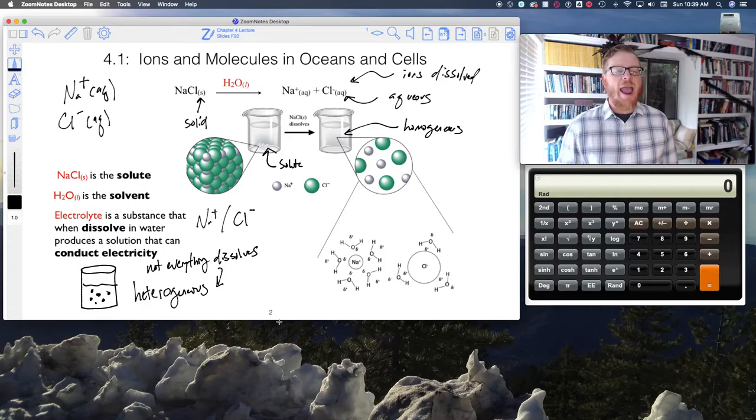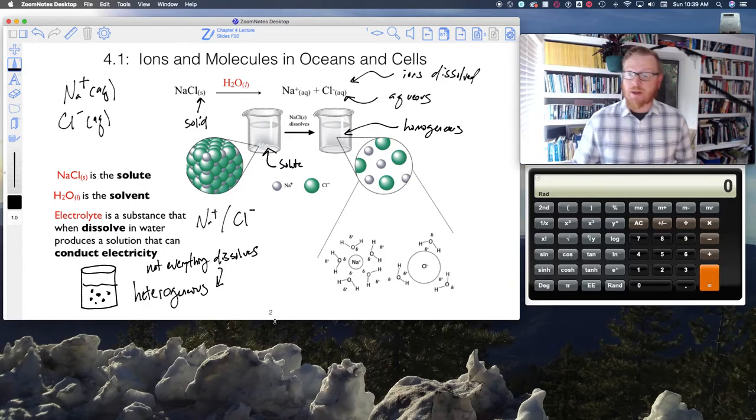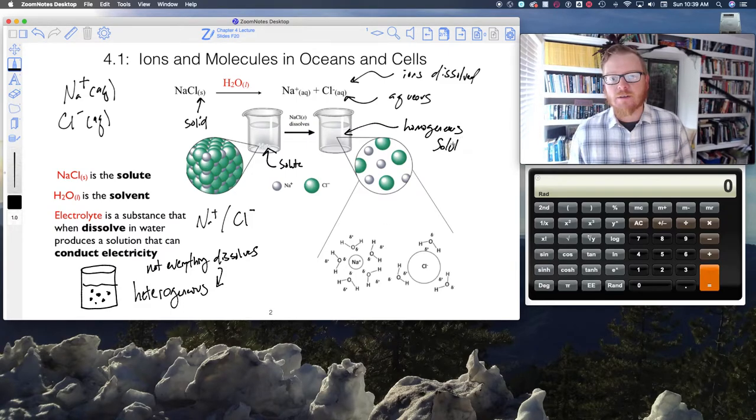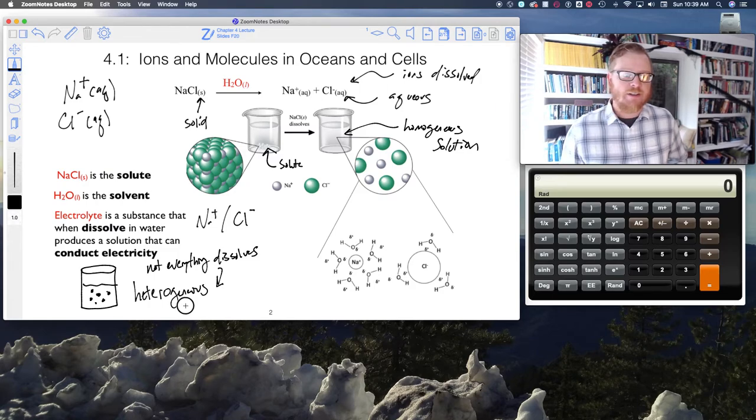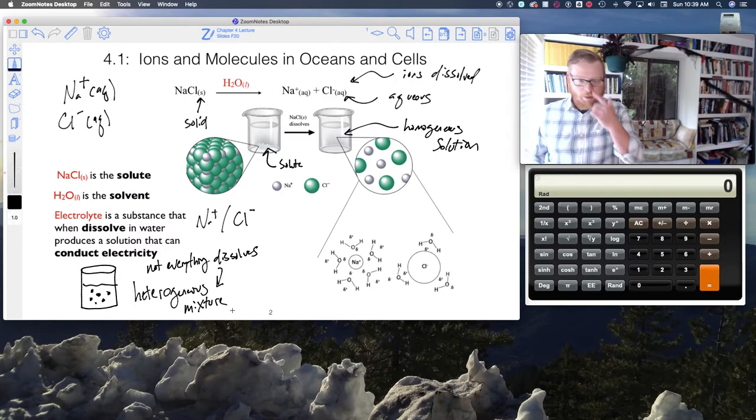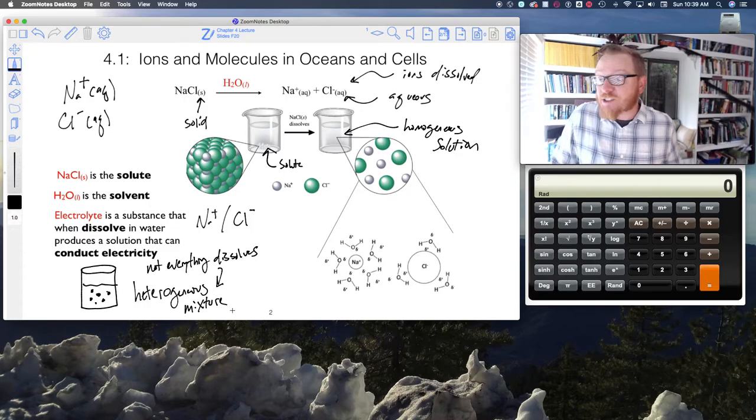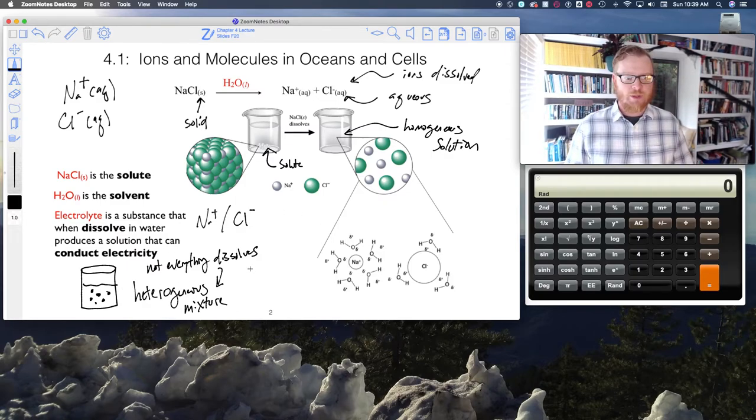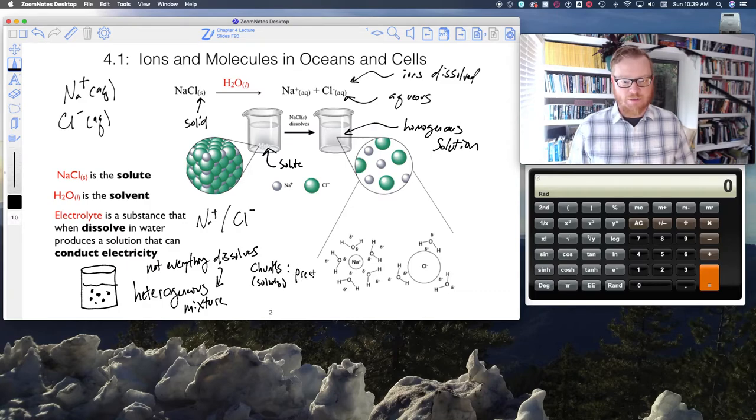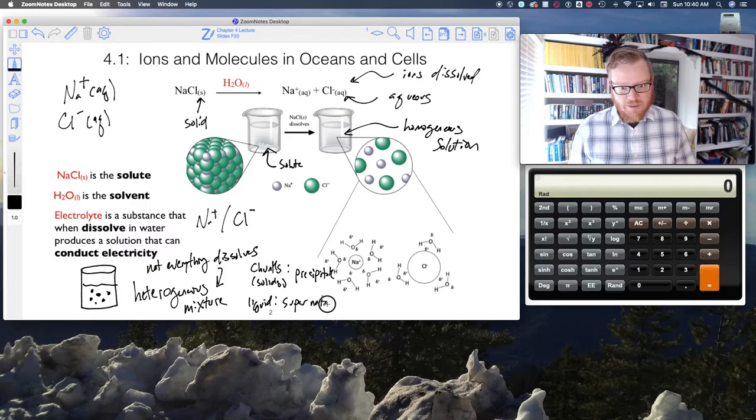We can have a homogeneous solution, but this heterogeneous has to be a mixture. Because in this heterogeneous mixture, not everything is dissolved, it hasn't made a proper solution. And then now continuing along with this, in our heterogeneous mixture, the chunks, the solids, we call the precipitate. And the liquid above the precipitate, we call the supernatant. That's only in the case of a heterogeneous mixture.